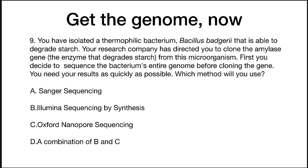The correct answer is probably a combination of B and C. Sanger sequencing is an older technology; it's slower and you can't get nearly as much base pair information. Illumina sequencing and Oxford Nanopore are both good methods, but a combination of the two is best. Illumina sequencing gives you very short, accurate sequences. Oxford Nanopore gives you much longer sequences — tens of thousands of bases — that you can then assemble. That's probably the best method to use.